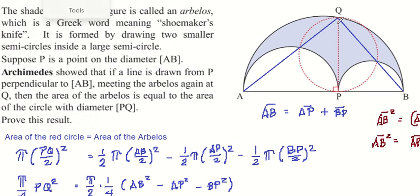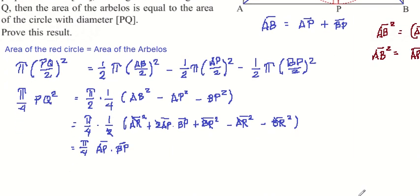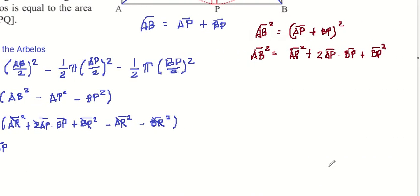Let me use a pointer here. If this is a 90-degree angle, then this should be equal to this angle here. And angle BQP here is equal to this angle here. So triangle APQ and triangle BPQ are similar triangles. Let me write them here to illustrate.